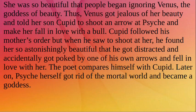Venus grew jealous of Psyche's beauty and told her son Cupid to shoot an arrow at Psyche and make her fall in love with a bull. Cupid followed his mother's order, but when he went to shoot at her, he found her so astonishingly beautiful that he got distracted and accidentally got poked by one of his own arrows and fell in love with Psyche. Later on, Psyche herself got rid of the mortal world and became a goddess.